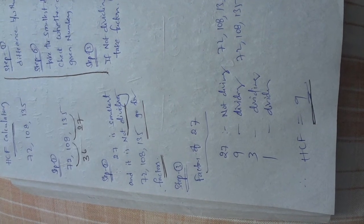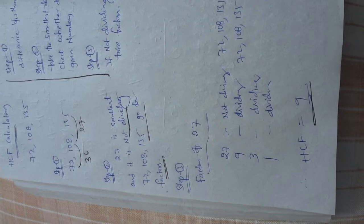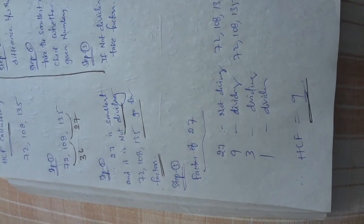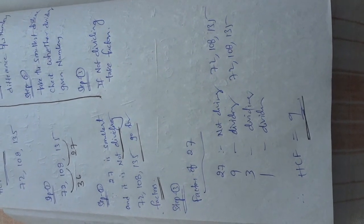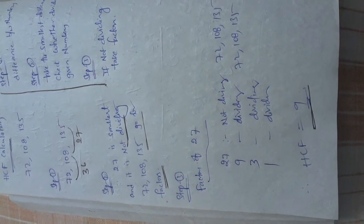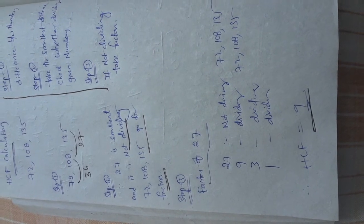Step 3 is if that number is not dividing, you take the factors and divide it. Let's start the example here. Step 1: given to us is 72, 108, and 135. The difference between 72 and 108 is 36, and 108 and 135 is 27. So I am going to step 2.